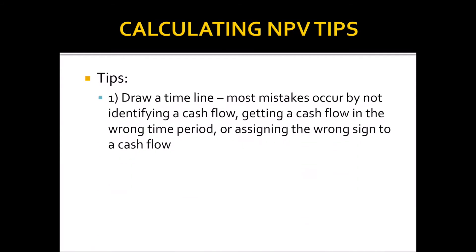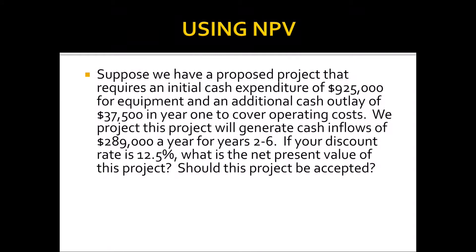Some tips for calculating net present value: always draw a timeline. Most mistakes occur by not identifying a cash flow, placing it in the wrong time period, or assigning the wrong sign. Here's another example: a project requires an initial cash expenditure of $925,000, an additional cash outlay of $37,500 in year one, then cash inflows of $289,000 for years two through six. The discount rate is 12.5%. What is the net present value?